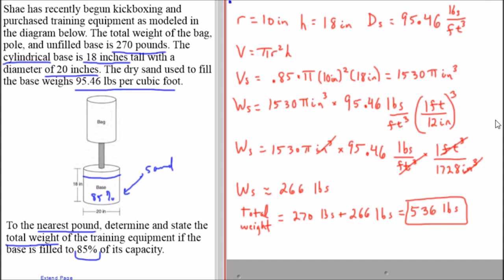The alternate solution is for the situation where we didn't convert the radius and height to feet. If we found the volume of sand in terms of cubic inches, plugging in 10 inches and 18 inches, our volume would be 1530 pi cubic inches.